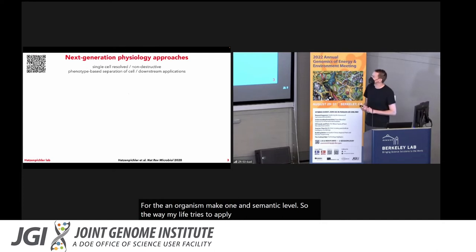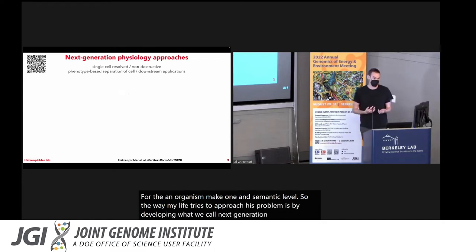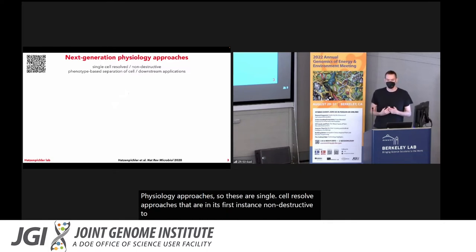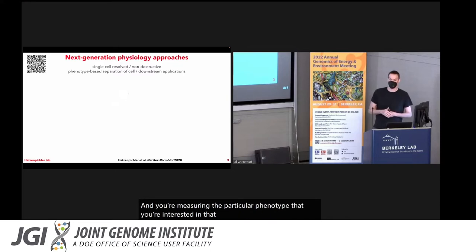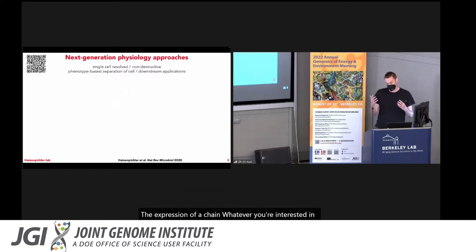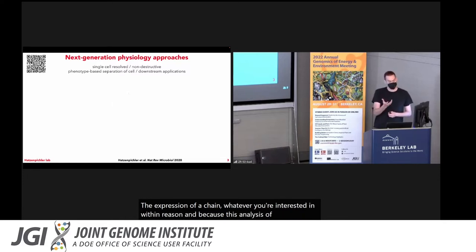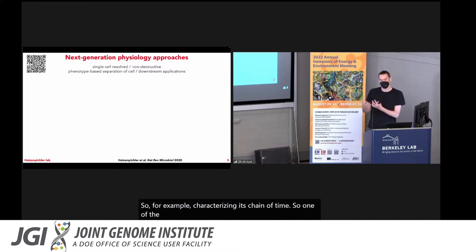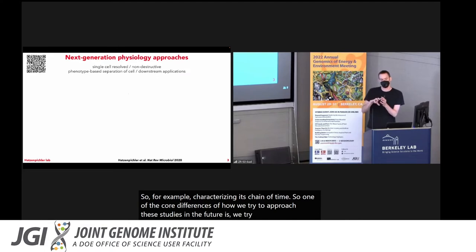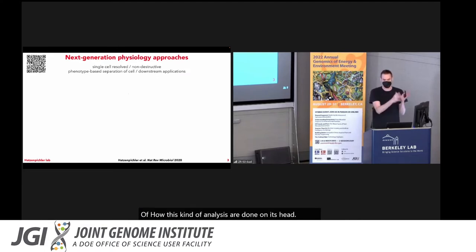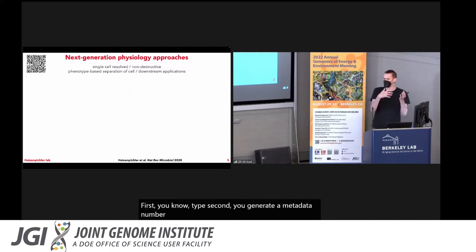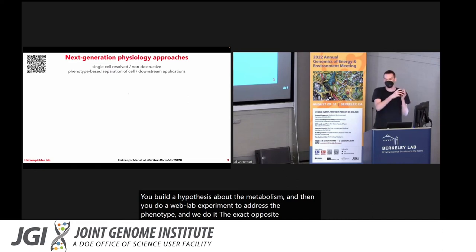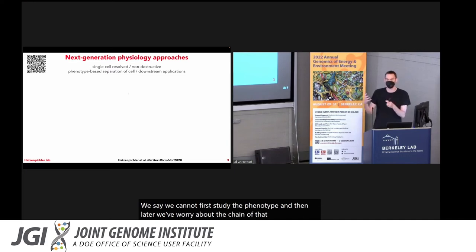The way my lab tries to approach this problem is by developing what we call next-generation physiology approaches. These are single cell resolved approaches that are in the first instance non-destructive to the cell. You're measuring a particular phenotype of interest, and because this analysis is not destructive, you can still do something else to that cell. One of the core differences of how we approach these studies is we turn the common approach on its head. We say first study the phenotype, and then later we worry about the genotype.